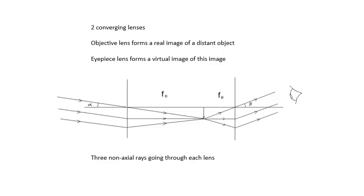And then the eyepiece lens forms a virtual image of this real image. So it magnifies the image. At GCSE you did these diagrams, and it's basically two diagrams put together - image of a distant object and a virtual image of that image.